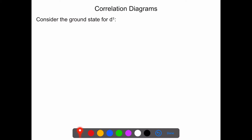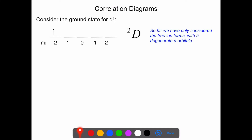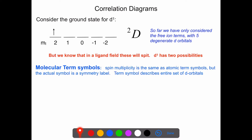To start out, we consider the simple case of a D1 metal. In a previous lecture we learned to identify the ground state term - it's a doublet D state. This is for a metal ion, but now we are dealing with a metal complex. Once we have ligands bound to our metal, the 5D orbitals are no longer degenerate, so we have to take that into consideration with our ground state term and excited terms as well.